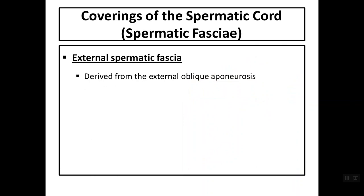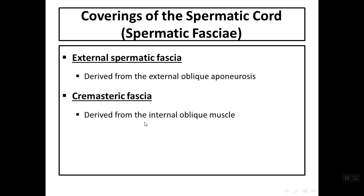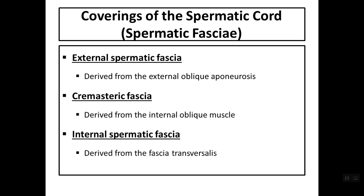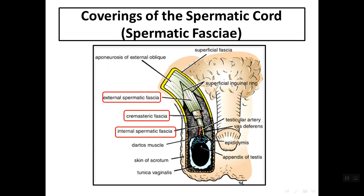The coverings of the spermatic cord — called spermatic fascia — are derived from the layers of the anterior abdominal wall. The outer layer is the external spermatic fascia, derived from the external oblique aponeurosis. The cremasteric fascia is derived from the internal oblique muscle. The internal spermatic fascia is derived from the fascia transversalis. In this drawing, we can see the spermatic cord with these three layers; the external spermatic fascia is continuous with the superficial inguinal ring.